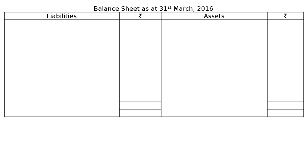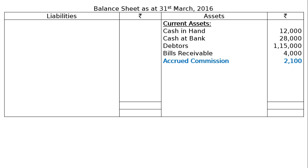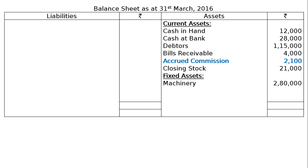Balance sheet as at 31st March 2016. On the asset side, current assets: cash in hand Rs. 12,000, cash at bank Rs. 28,000, debtors Rs. 1,15,000, bills receivable Rs. 4,000, accrued commission Rs. 2,100 (an adjustment item, commission receivable), closing stock Rs. 21,000. Fixed assets: machinery Rs. 2,80,000 with no depreciation, furniture Rs. 34,000. Total assets Rs. 4,96,100.